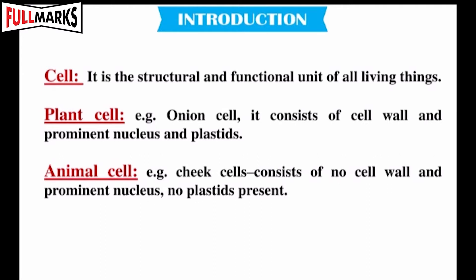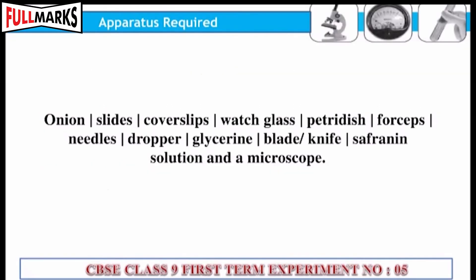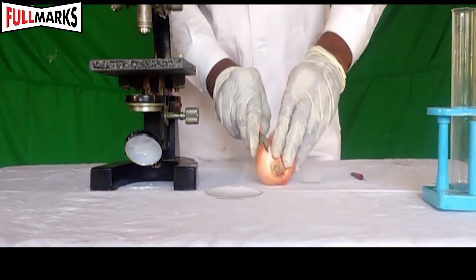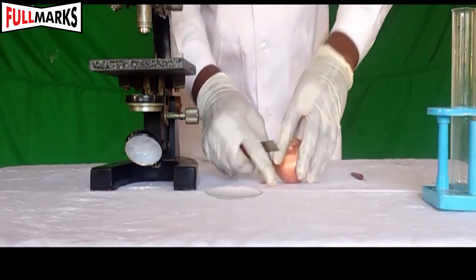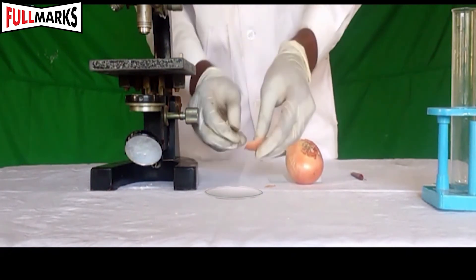Apparatus required: onion slides, cover slips, watch glass, petri dish, forceps, needles, droppers, glycerin, blade or knife, safranin solution, and a microscope. Procedure: take a medium-sized onion and cut its outer surface with the knife.